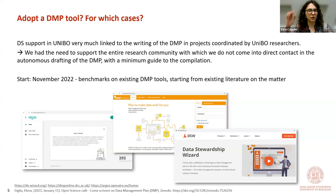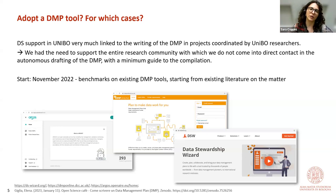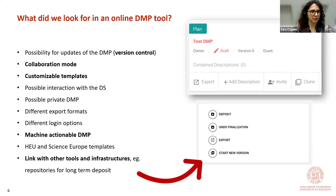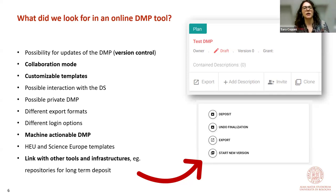We — myself and the other three data stewards currently working at the University of Bologna — are part of a working group on open science and data management. We work at the research division, within the central administrative offices of the university. When we started as data stewards, we had the need to reach a very large academic community composed of people with really different kinds of data research practices, types of projects, and research activities.